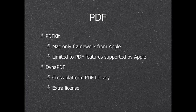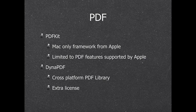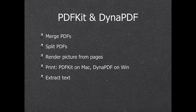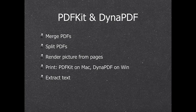We have a lot of PDF functions. We support both PDFKit from Mac — Apple's framework — and DynaPDF, a cross-platform PDF library. DynaPDF requires an extra license but works cross-platform and brings a lot of PDF functionality to Windows. With both PDFKit and DynaPDF we can merge and split PDFs. For example, you can attach your terms or advertisement to an invoice PDF and send one PDF to the customer. You can also split PDFs — storing each page in its own record with text for full-text search.